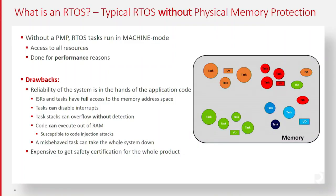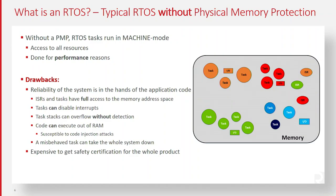This is what an RTOS looks like without a physical memory protection unit, without PMP. All the memory is shared between all the different tasks. I show all the different tasks as circles, I/O devices as squares, and ISRs as ovals. The RTOS and the application share the same space — the same system space or privilege state. A lot of RTOSs today don't have the notion of privilege versus non-privilege. There are drawbacks: a task could disable interrupts, a task could write to any other task's memory — not good things.